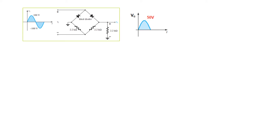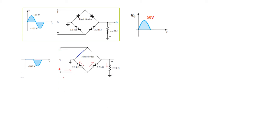Now let's solve for the negative half cycle. Negative at the top and positive at the bottom means the other diode becomes forward biased — shown as a short circuit — and the first becomes reverse biased — shown as an open circuit. We simplify by flipping the circuit upside down so the positive comes at the top and negative at the bottom.